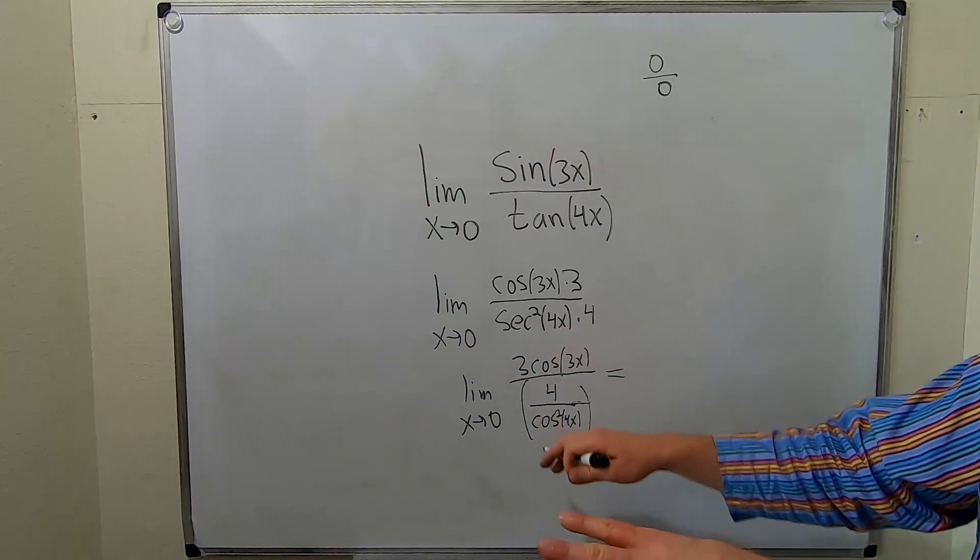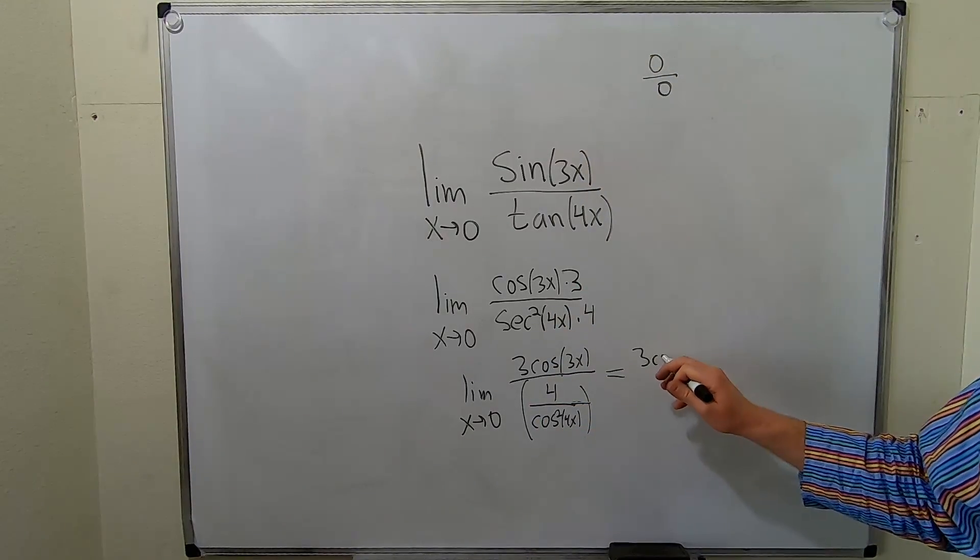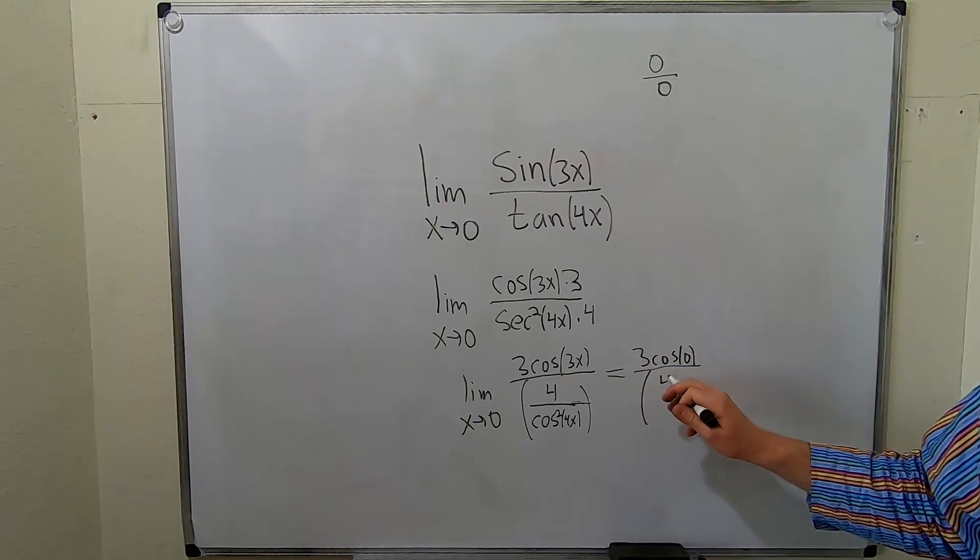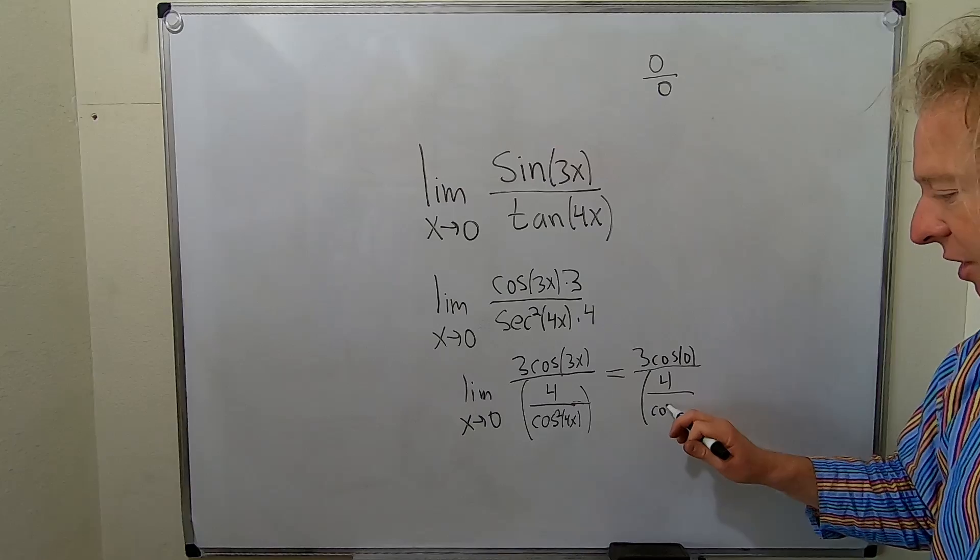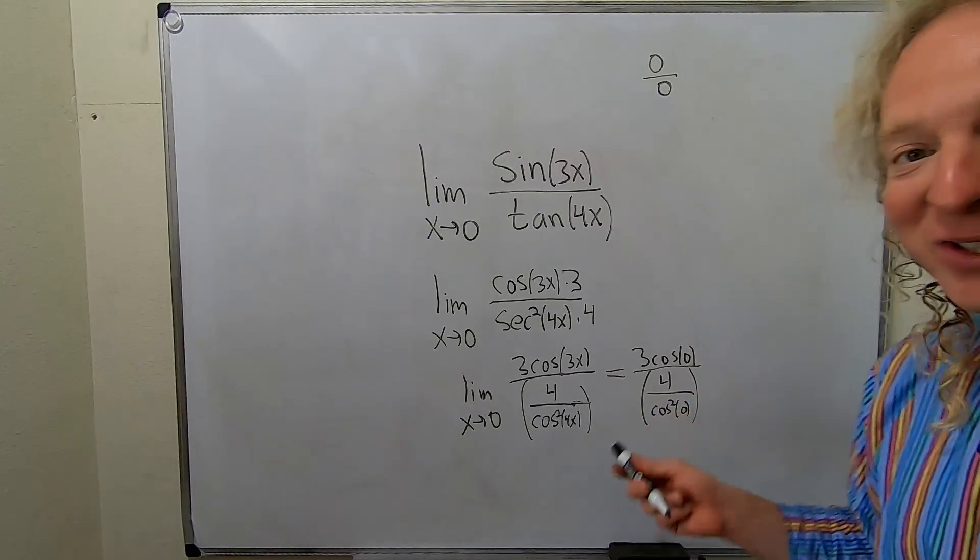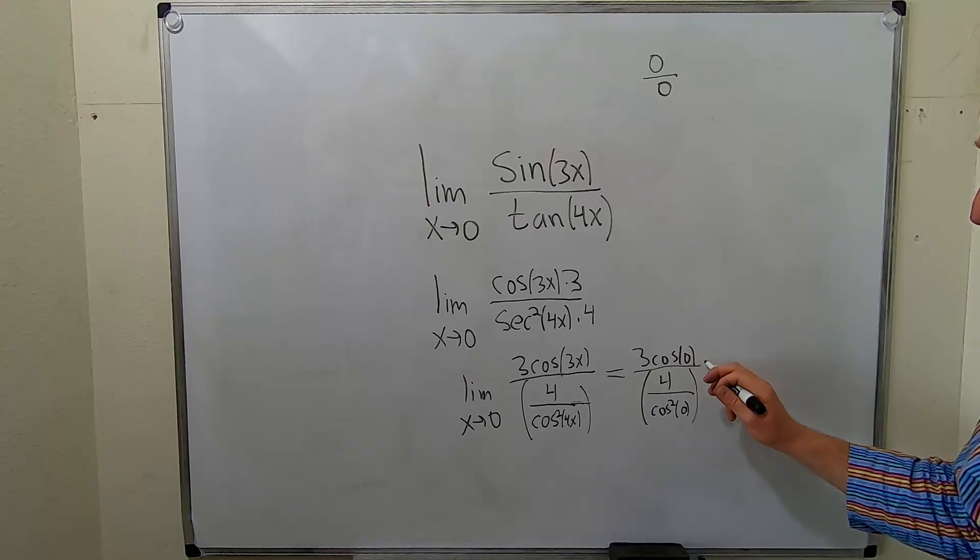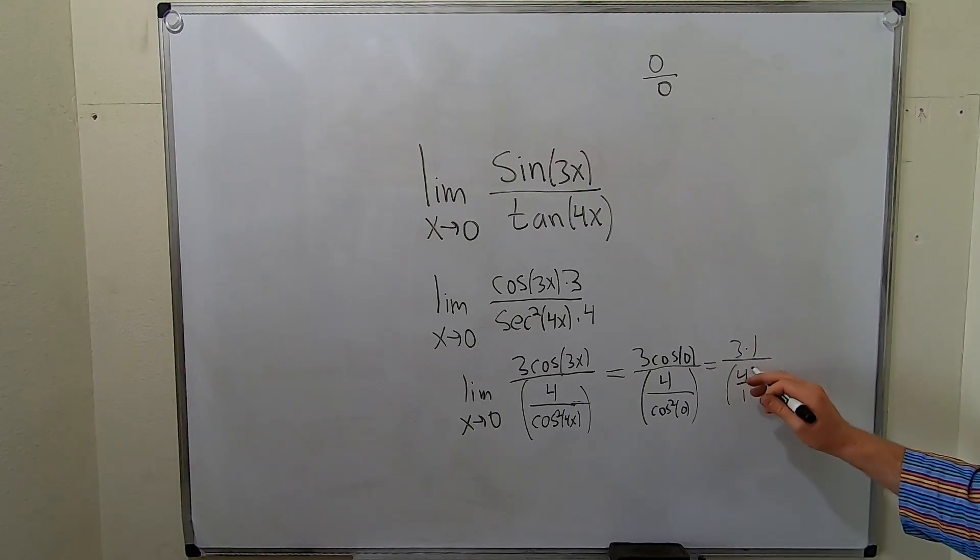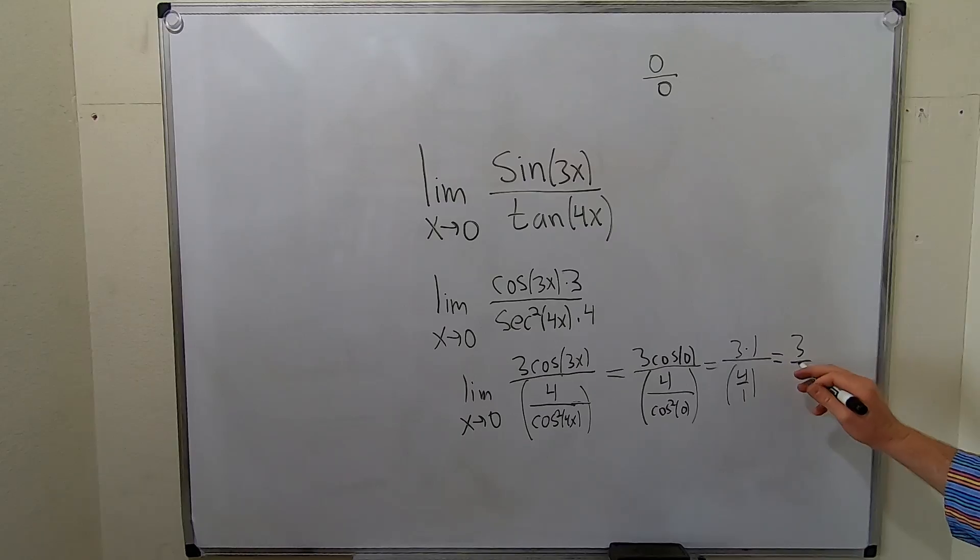So now you drop the limit sign. It's 3 cosine of 0 over 4 over cosine squared of 0. I'm showing every little step. Ridiculous. Cosine of 0 is 1. So this is going to be 3 times 1 over 4 over 1. So this is just 3 over 4.